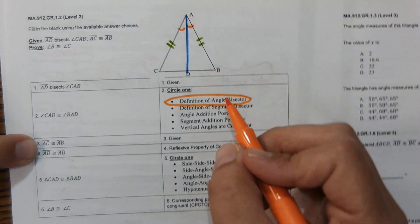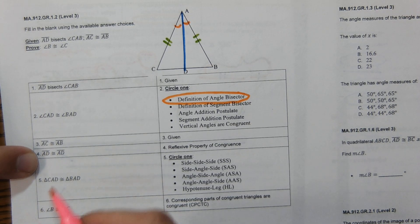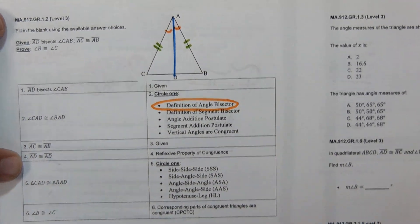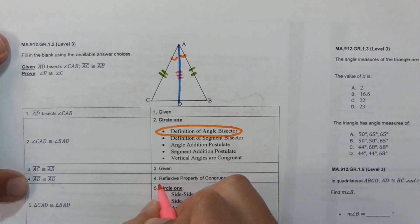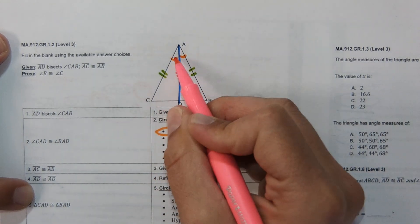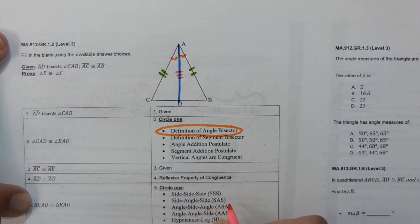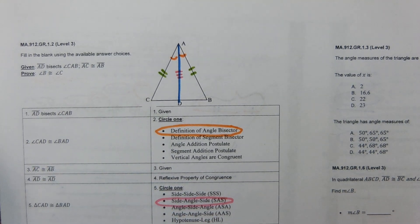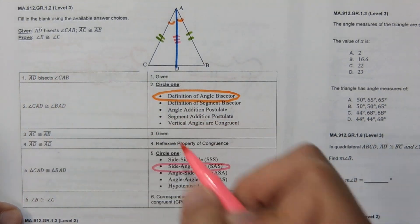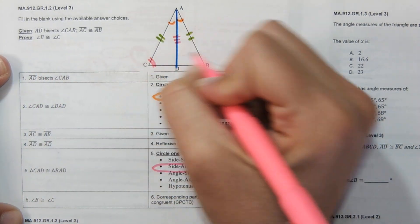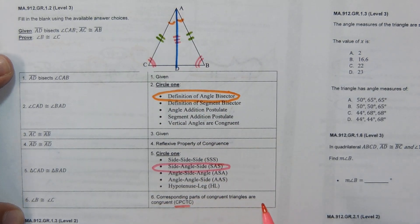AD is congruent to itself by the Reflexive Property. Looking at the triangle, we have Side-Angle-Side, so we can prove the triangles congruent by SAS. Then the last statement proves that the two angles are congruent because corresponding parts of congruent triangles are congruent, or CPCTC.